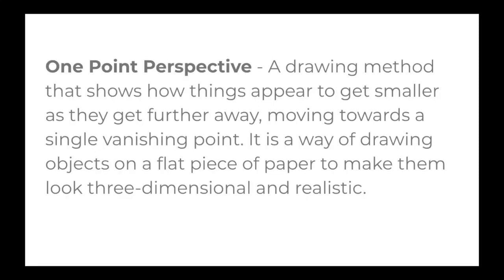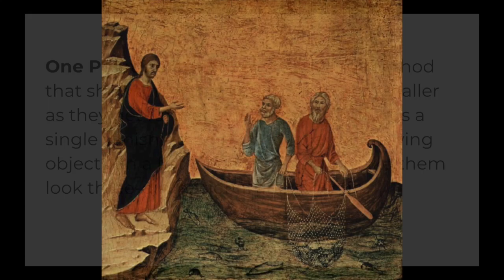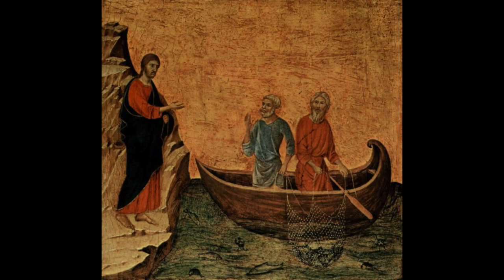First let's look at what one-point perspective is. It's a drawing method that shows how things appear to get smaller as they get further away moving towards a single vanishing point. It is the way of drawing objects on a flat piece of paper to make them look three-dimensional or realistic. It's the way the artist creates magic.